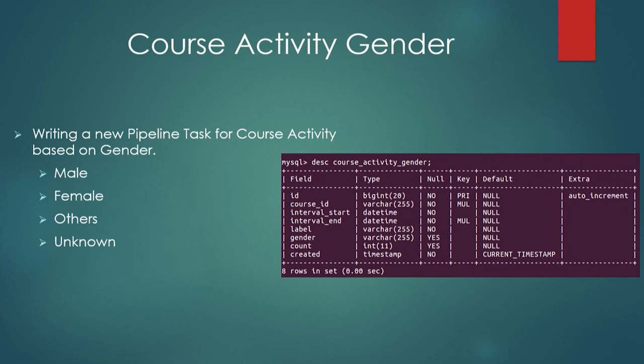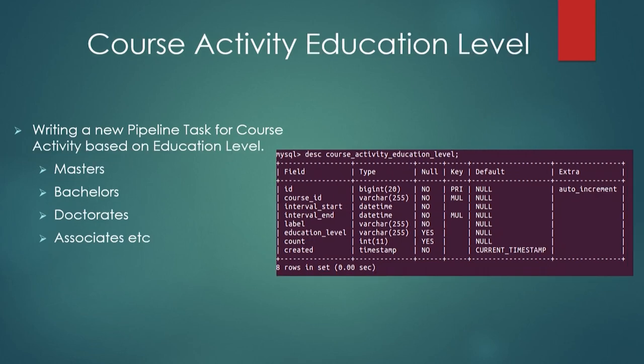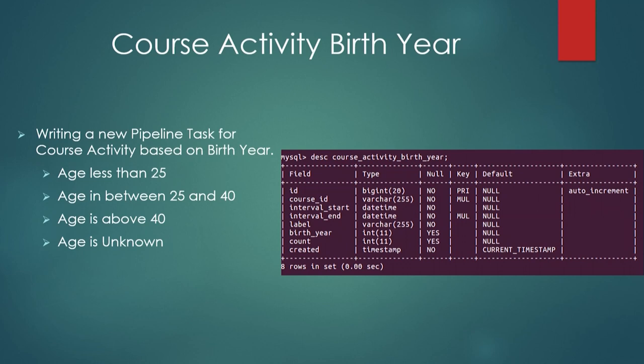When the gender task runs, a MySQL database table is created as described. The next task is course activity education level, giving the learners count for each activity category per week based on education level — categories include masters, bachelors, doctorates, etc. The third task is birth year, where learners are categorized based on their birth year, and a corresponding MySQL table is created when this task runs.